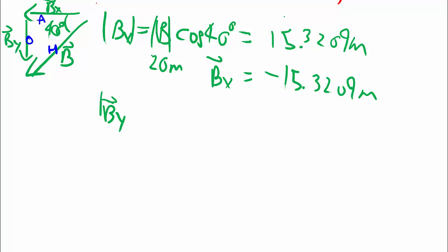Then By, very similar situation, being the opposite, we use sine 40, giving us 12.856 meters. When including direction downwards, it's negative 12.856 meters.